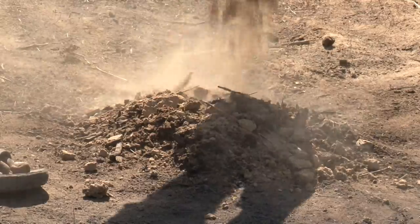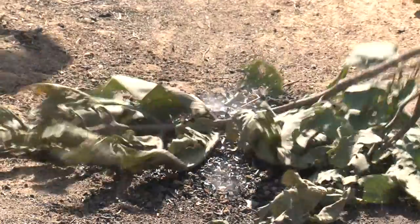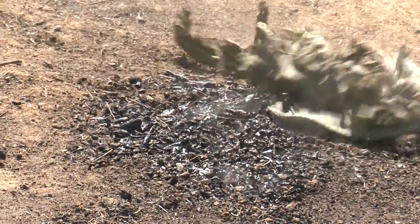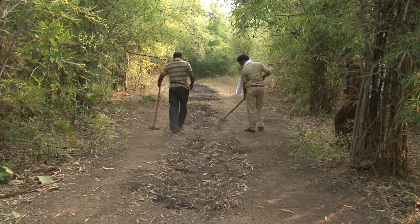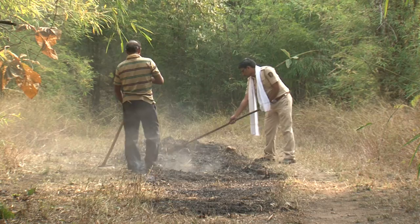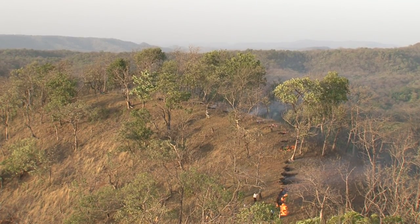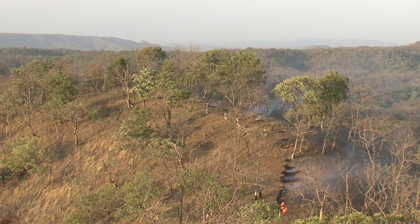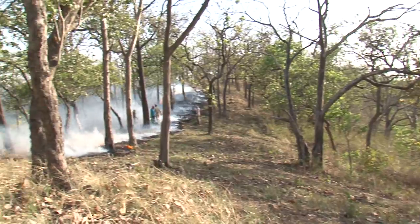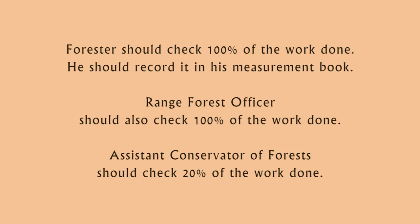To be sure that no flame remains, cinders should be covered with soil. If water is available, these may be extinguished by pouring water over them. After burning is complete, forest guards must inspect the entire burnt-out fire line for any burning cinders and must maintain all records in their diary. For protection of forests in hilly terrains, fire lines should be drawn along the ridges so that fire from one side does not spread to the other. This is a 12-meter wide fire line being burnt along the ridges. The forester should check 100% of the work done and record it in the measurement book. The range forest officer should also check 100% of the work done, and the assistant conservator of forest should check 20% of the work done.